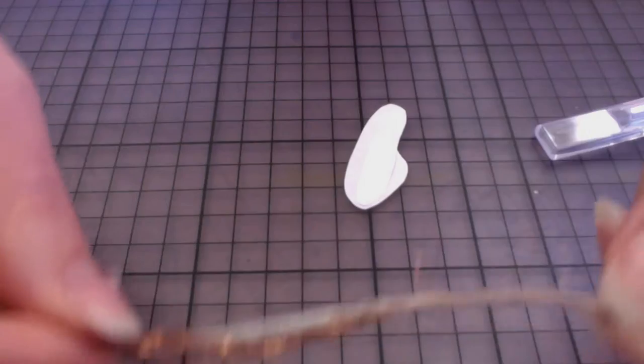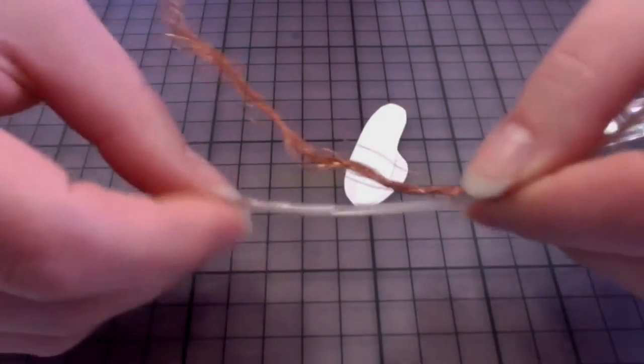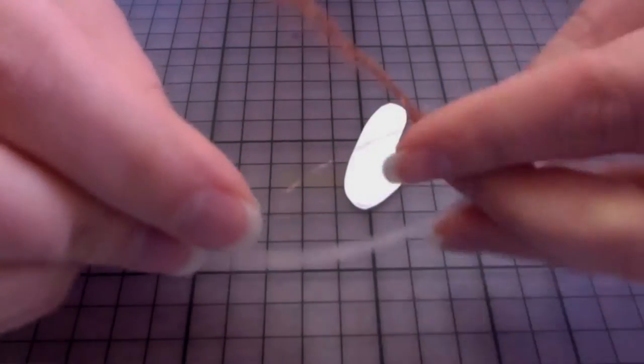So this is speaker wire, you can get it at any hardware store, and then you cut it open and inside is all these very fine filaments. So you take one and you cut off a chunk.